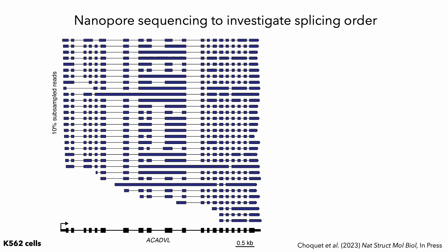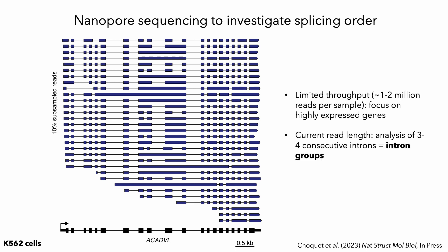Before moving forward, I do want to mention that direct RNA nanopore sequencing still has limited throughput, so we do focus on highly expressed genes. And with the current read length, we can analyze about three to four consecutive introns, which I'll refer to as intron groups.